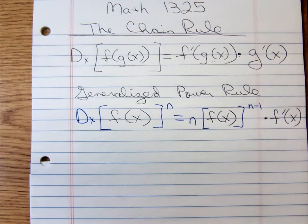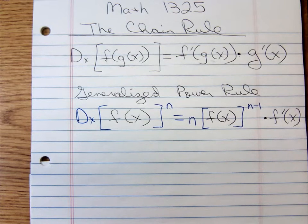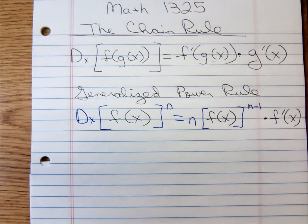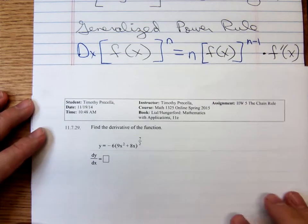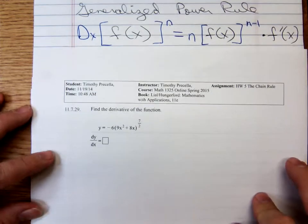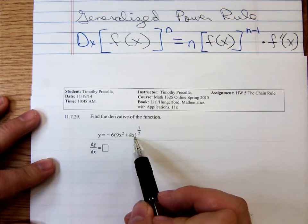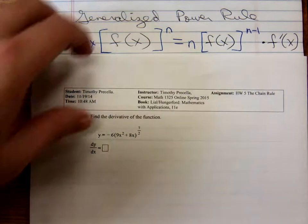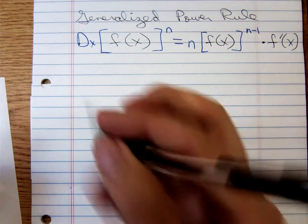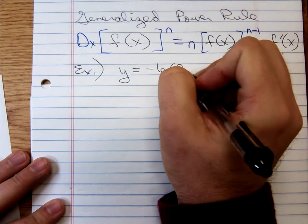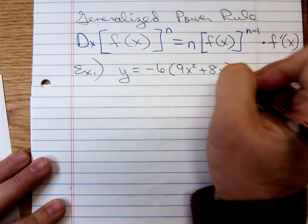This generalized power rule is very important. For example, if you have a square root and the thing under the square root is something more than just a single x, you'll have to use the generalized power rule — or if you have any quantity raised to a power. Here's an example: y equals negative 6 times 9x squared plus 8x, to the 7 halves power.